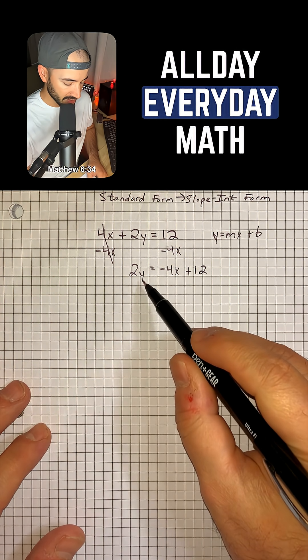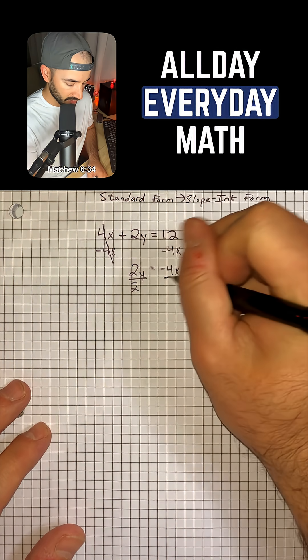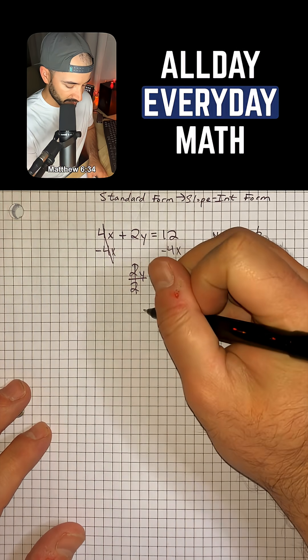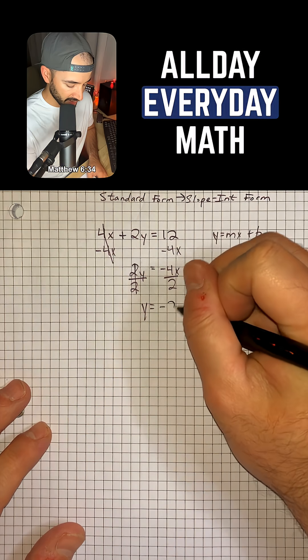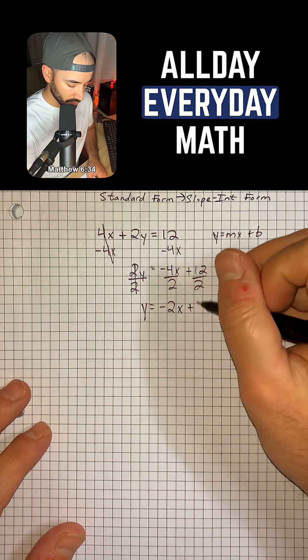So now we want to get y by itself. 2 is being multiplied by y, so we can divide everything by 2 to cancel this out and leave us just with y = -4 divided by 2 is -2x, plus 12 divided by 2 is 6.